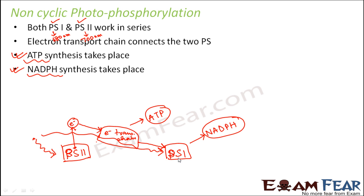Our aim is to understand this non-cyclic photophosphorylation in detail — how the electron travels through the transport chain, why it travels, how ATP is produced, and how NADPH is produced. Now, why it is a non-cyclic process: because it starts from PS2, which is the starting point, and the ending point is PS1. It does not come back to the starting point — that is why it is a non-cyclic process.